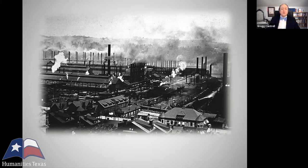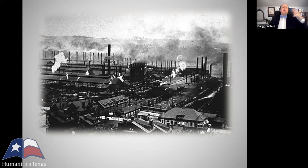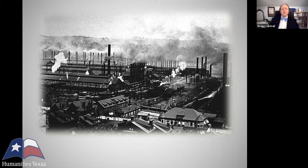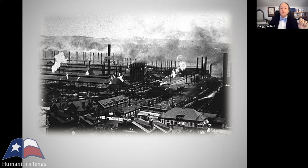The new industrial order was made possible by the creation of the modern corporation. Now we think of corporations as sort of the epitome of the free enterprise system. But in reality, corporations, by definition, are creations and creatures of the state. A corporation is a company that's granted a charter or a license to do business by a government, usually a state government, and that license gives it special privileges, primarily the privilege of selling stock to investors, who are then granted limited liability for the corporation's debts.